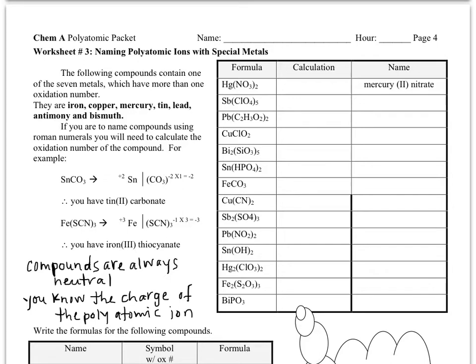Remember that there are seven special metals. They're listed here. And what's special about them is that depending on what they bond with and what conditions they form under, there are two possible different charges that they can have.